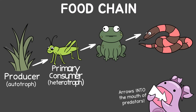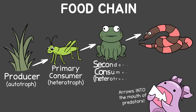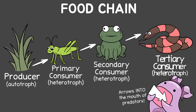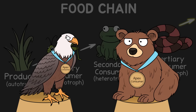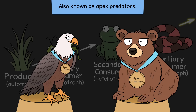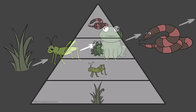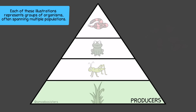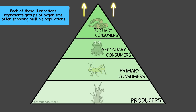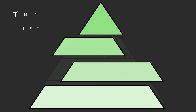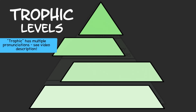The first consumer in a food chain is a primary consumer, then a secondary consumer, then a tertiary consumer. At the top of the food chain you have what are known as apex consumers. A food chain could be arranged into an energy pyramid, with producers at the base, primary consumers above that, then secondary consumers, tertiary consumers, and so on. Each of these pyramid levels are called trophic levels.